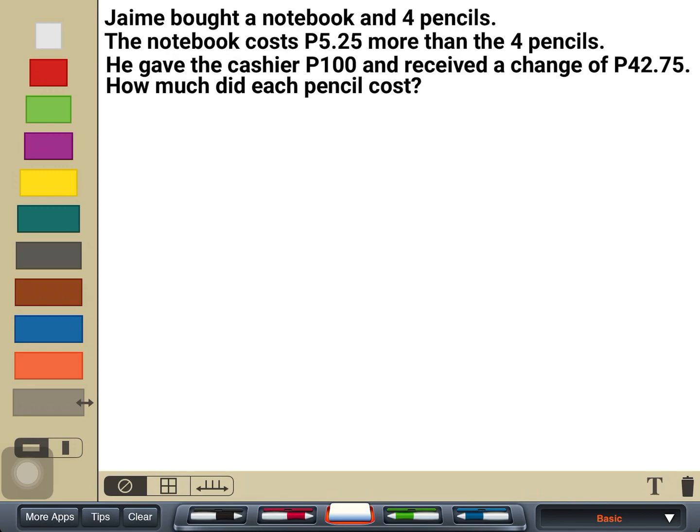There are a lot of information in this word problem. So we have to break it down into smaller bits of information so that it's easier for us to understand. We have to ask first, what items did Jamie buy? We know that Jamie bought five items. Those five items are one notebook and four pencils.